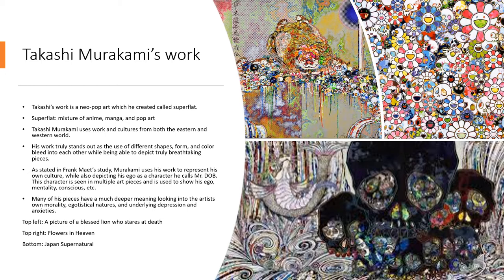As stated in Frank Miette's study, Murakami uses his work to represent his own culture, and in doing so, he created a character called Mr. Daub, which depicts his own ego. His pieces have much deeper meaning, which makes them highly interesting, as they look at things such as egotistical natures, mortality, and depression. We can see this in the top-left photo, called A Picture of a Blessed Lion Who Stares at Death.